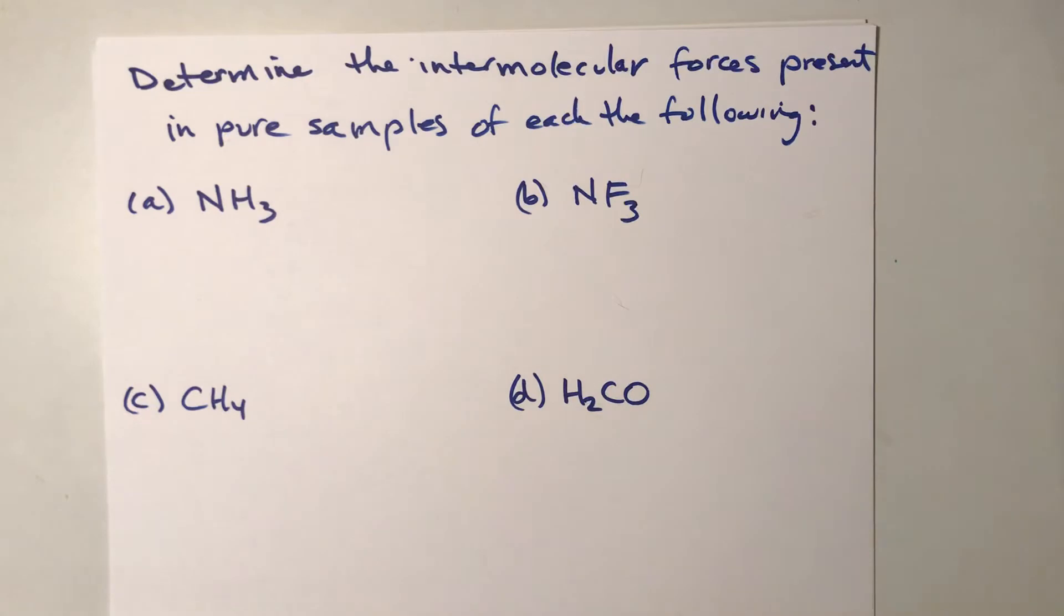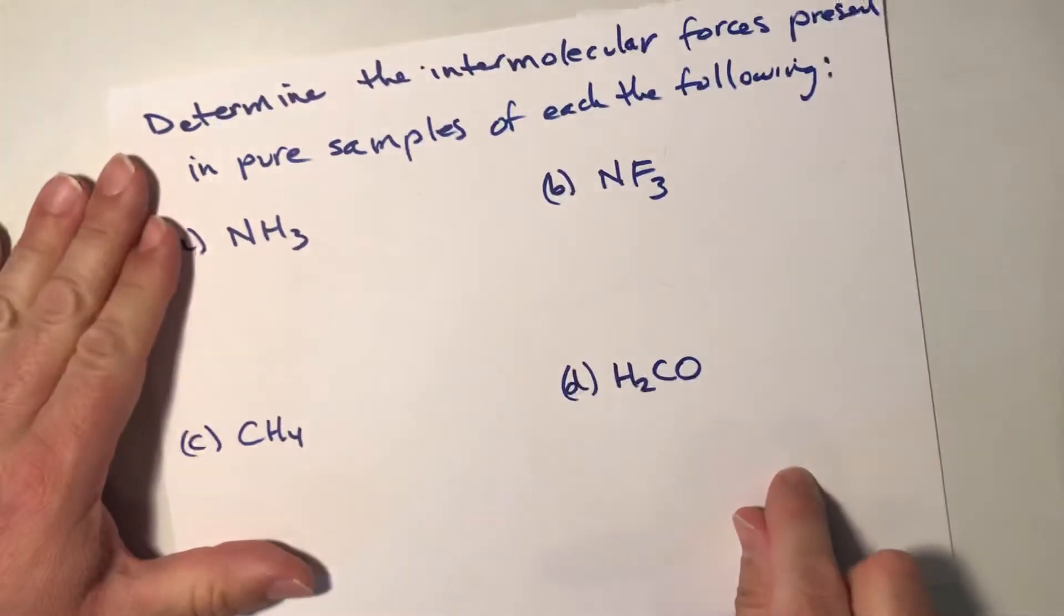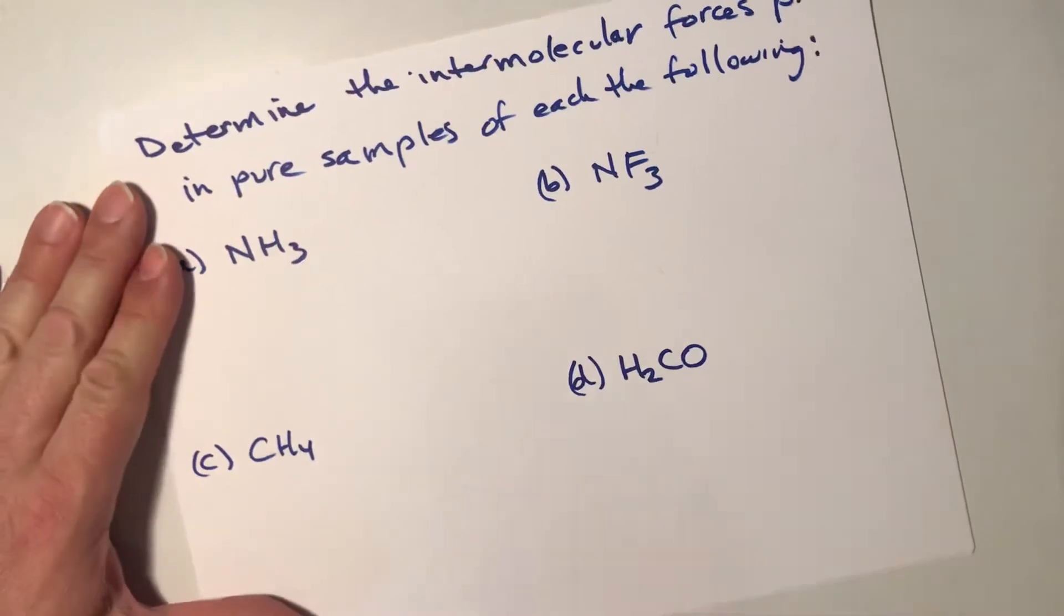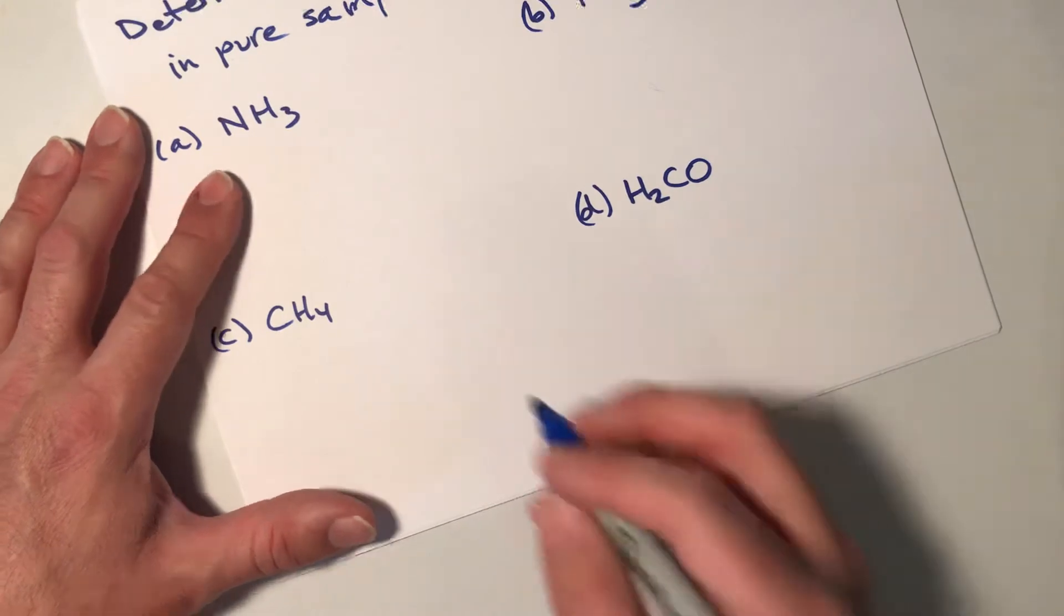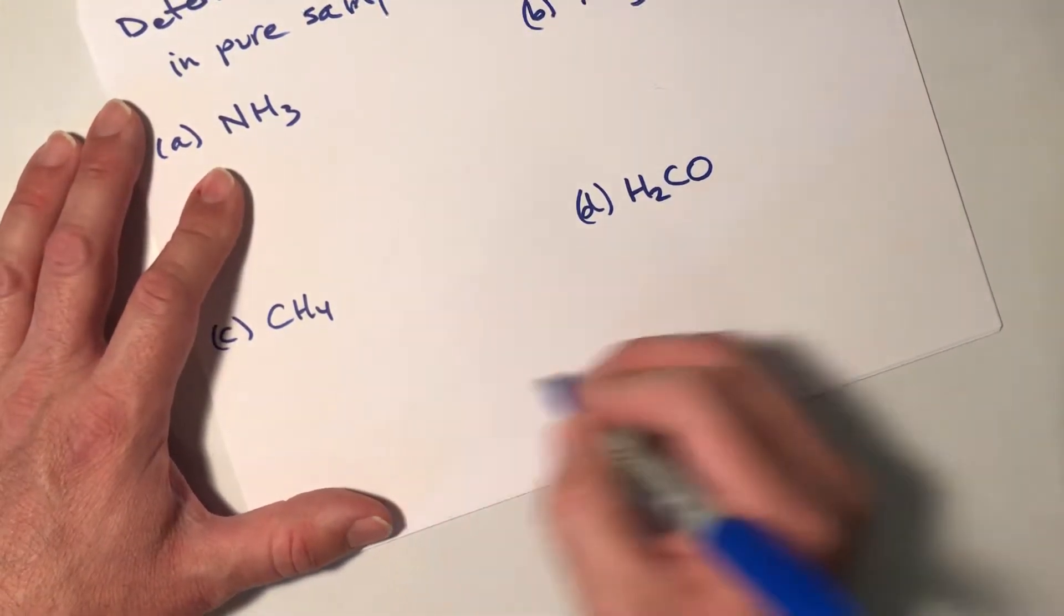All right, so for the first substance, ammonia, NH3, we know that there are, generally speaking, three forces that we're going to be looking for in pure substances. Those are going to be London dispersion.